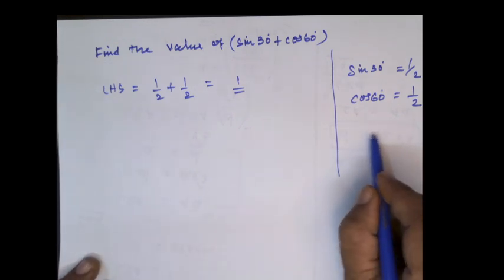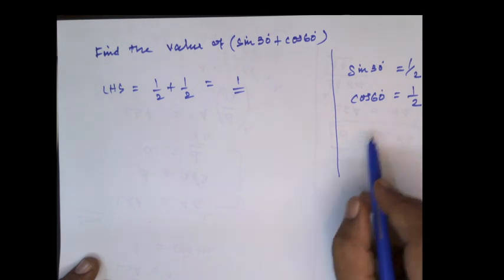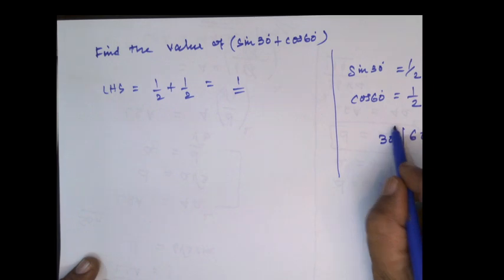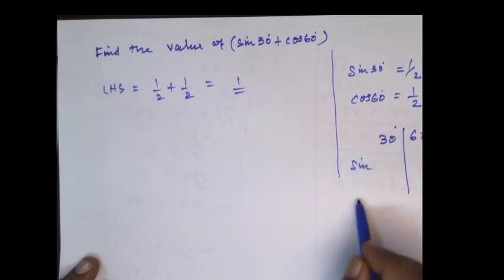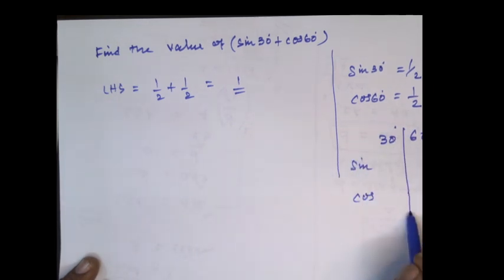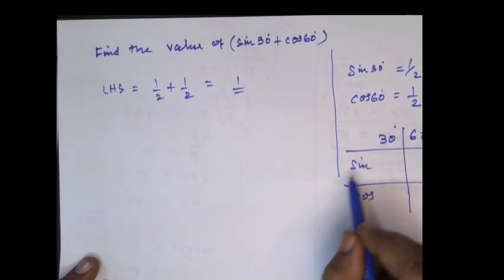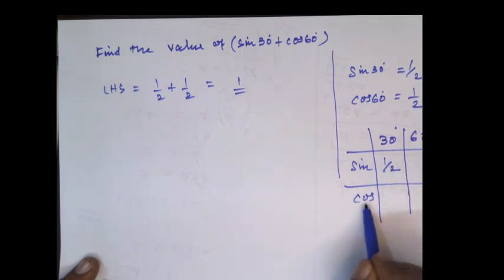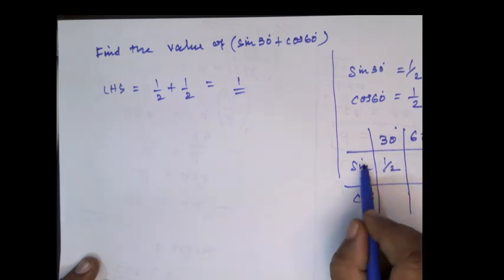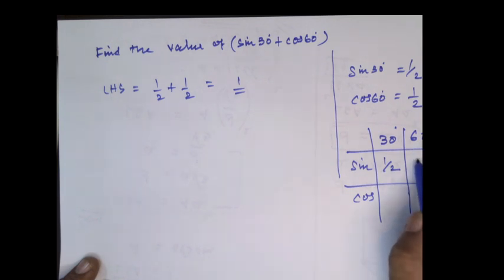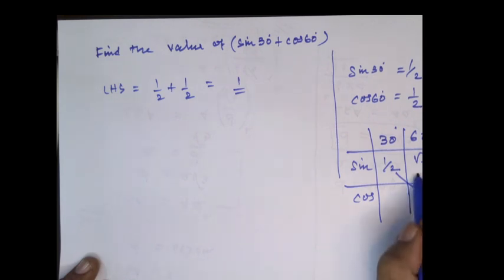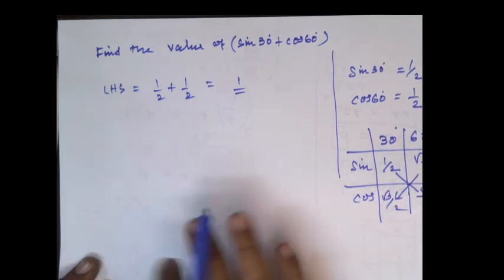It is very easy for you to remember these values. For example, you can put 30 degree and 60 degree, put sine and cos here. Sine 30 degree means 1 by 2, and sine 60 degree is root 3 by 2. This is the diagonal, so you can simply put the diagonal values. That is the easiest way to remember.